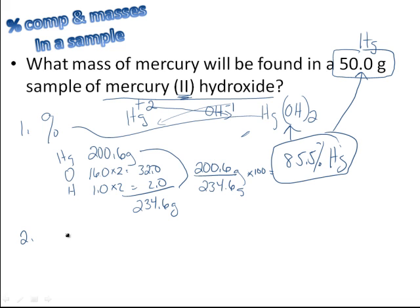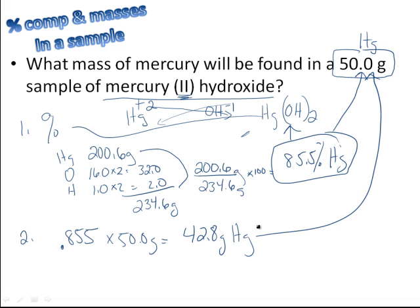So we know this sample is 85.5% mercury. The question is, what's 85.5% of 50? That's our step two. We take our percent, we lose a percent sign, and we move our decimal point over. So it's 85.5 times 50 grams, and when you multiply the two together, you get about 42.8 grams of mercury. So whenever you're given a mass of a sample, always take that and deal with it second. First thing you have to do is figure out the percent. Once you know the percent, you just multiply percent times the mass.